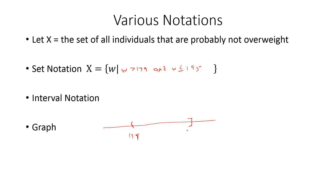For the graph: parenthesis at 179 (greater than, not equal to), bracket at 195 (less than or equal to), with shading in between. Interval notation: (179, 195]. Remember, you only need to show all three notations for one of your intervals — you choose which one. I'm showing it on all of them so you can see it several times.